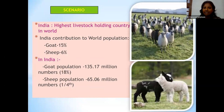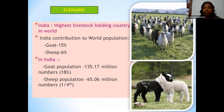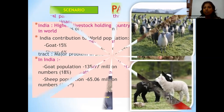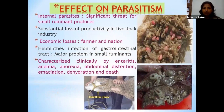Coming to the present scenario, India holds the highest livestock population, contributing 15% to the goat industry and 6% to the sheep industry in the world population. Within India, 18% of the goat population and one-fourth of the sheep population are contributing to economic upliftment. However, various diseases — viral, bacterial, and parasitic — are dragging this industry behind, acting as a significant threat to small ruminant producers in general.